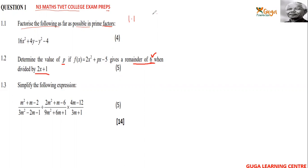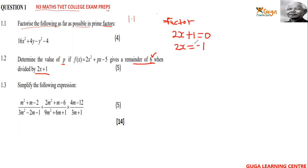Here it means we can start by getting our factor value. Set 2x plus 1 equal to zero. So 2x = negative 1, and x = negative ½. We take this value of x and substitute it into the function f(x).